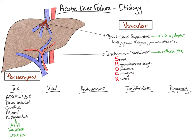Of the viral etiologies, hepatitis A, B, D, and E all cause acute liver failure. Of note, hep C alone does not appear to cause acute liver failure. Hepatitis B virus is most common in the USA, accounting for approximately 8% of cases. Hep E is a more frequent cause in endemic areas: Russia, Pakistan, Mexico, and India. Additional viral etiologies include HSV, VZV, CMV, and EBV. To work up viral etiologies, we obtain the serologies shown.